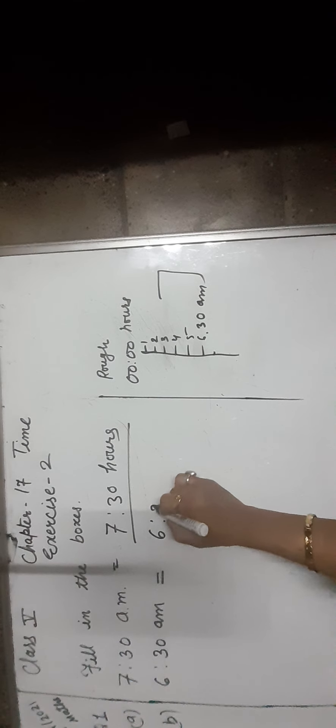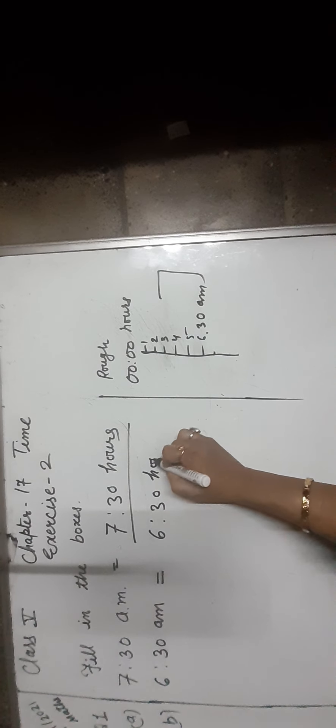Let us convert 6:30 AM into 24-hour clock. As you know, in the 24-hour clock, a day begins at 12 midnight, which we write as 00 hours. From 00 hours to 6:30 AM, 6:30 hours are completed.